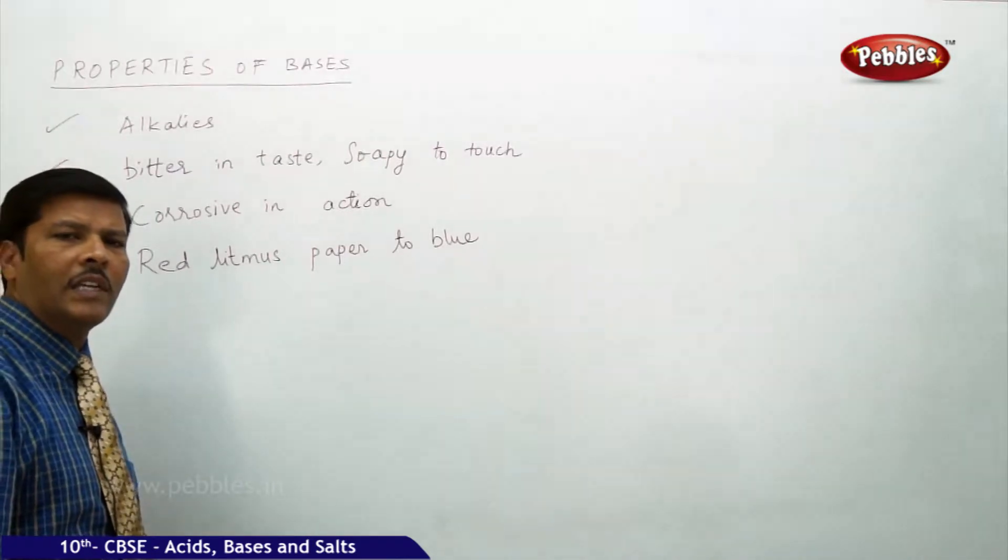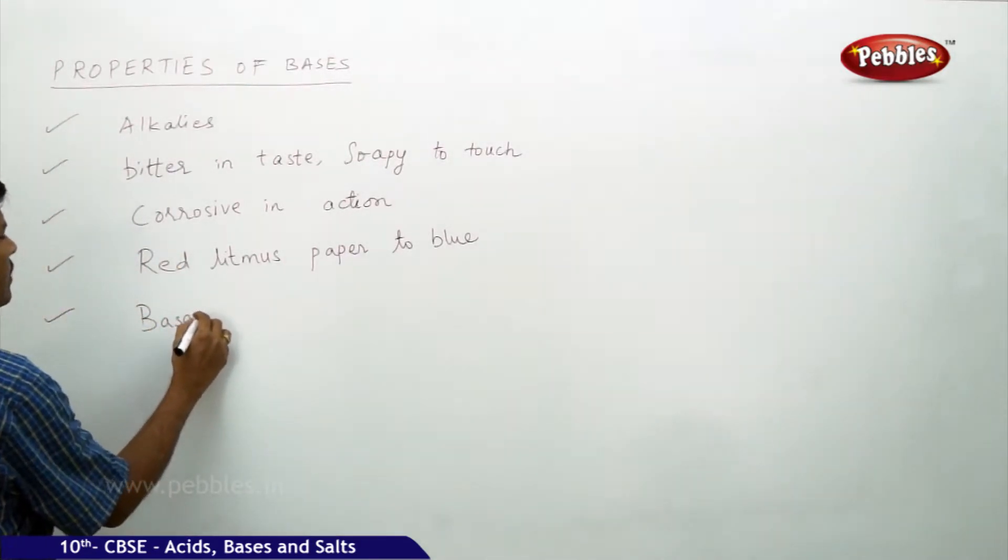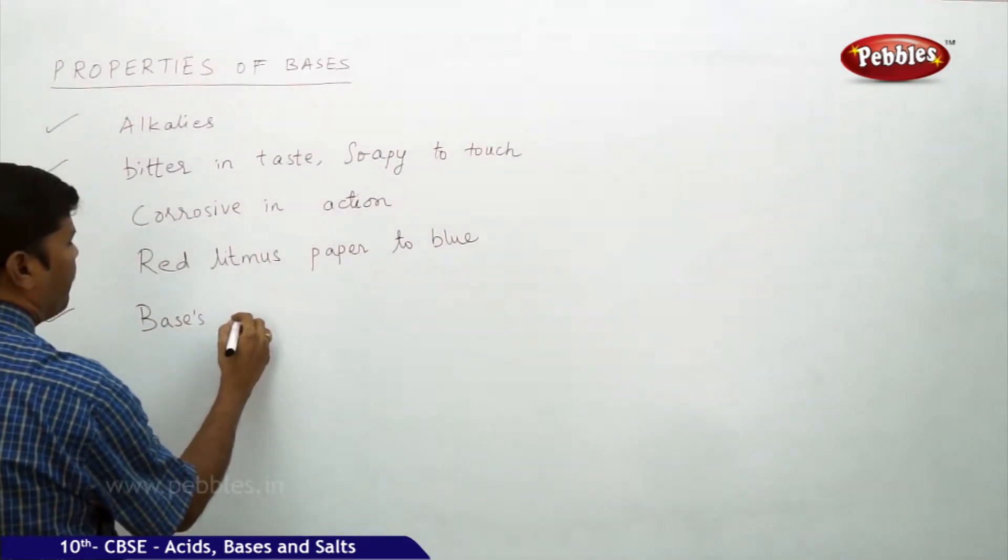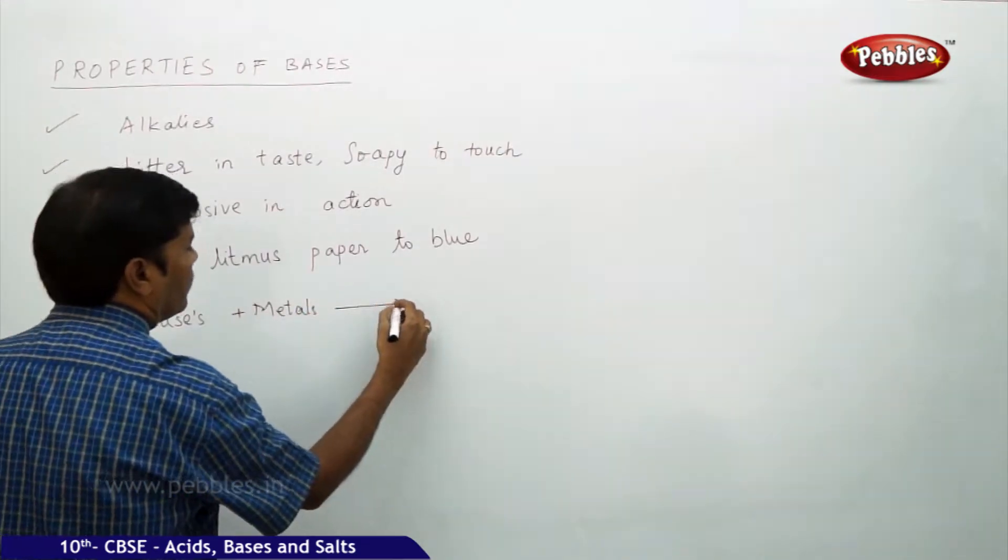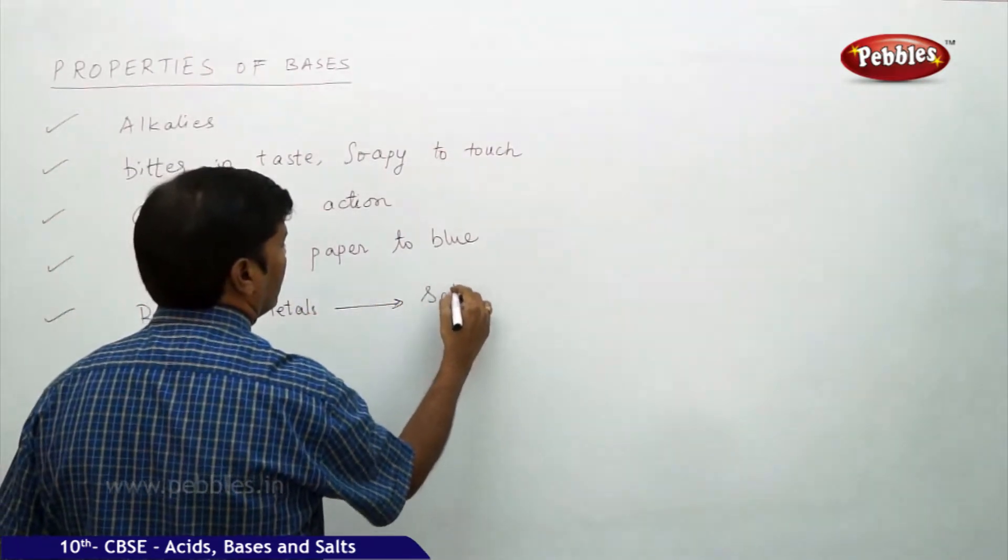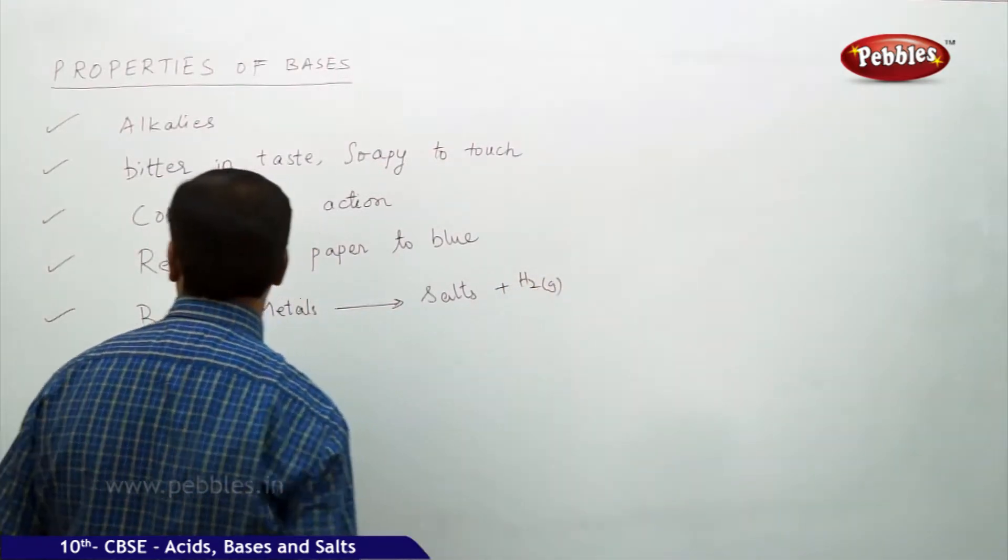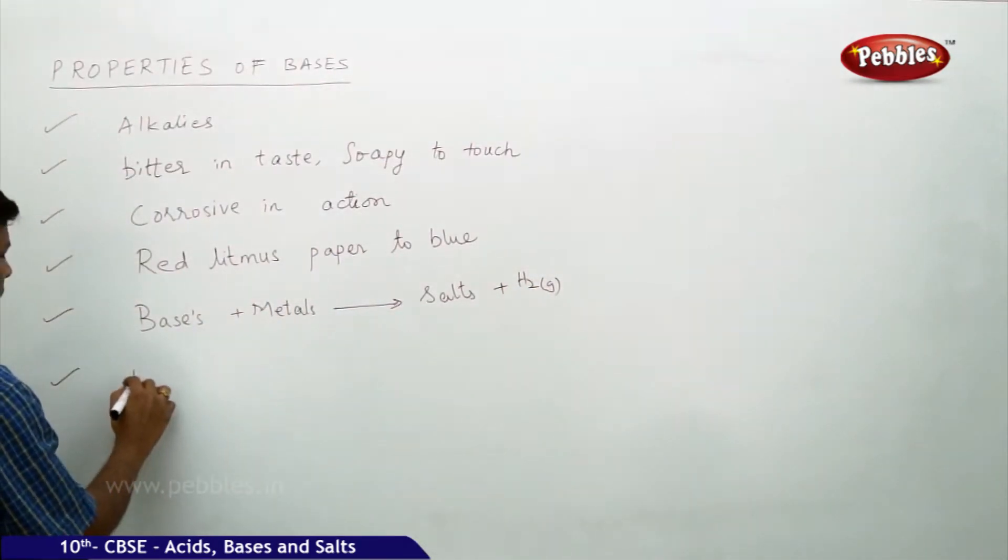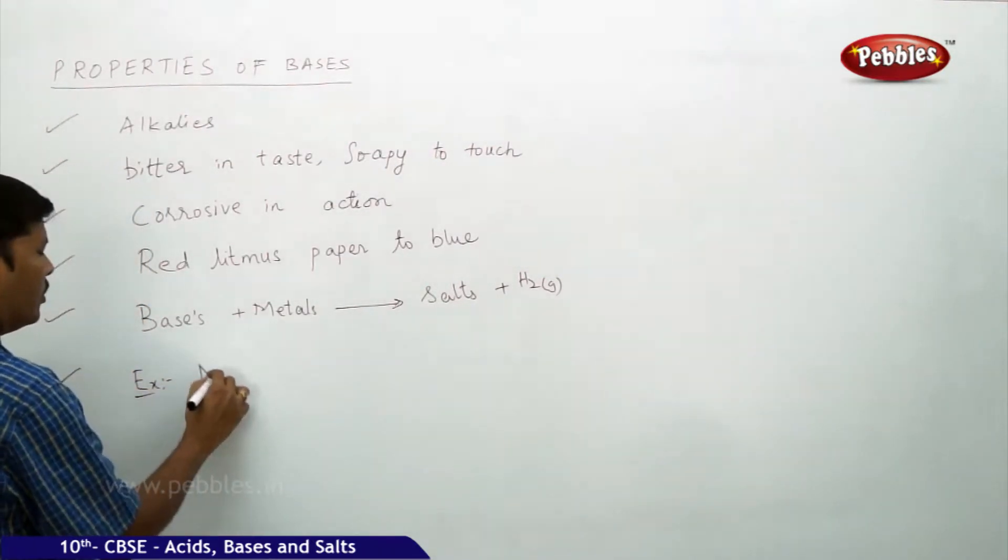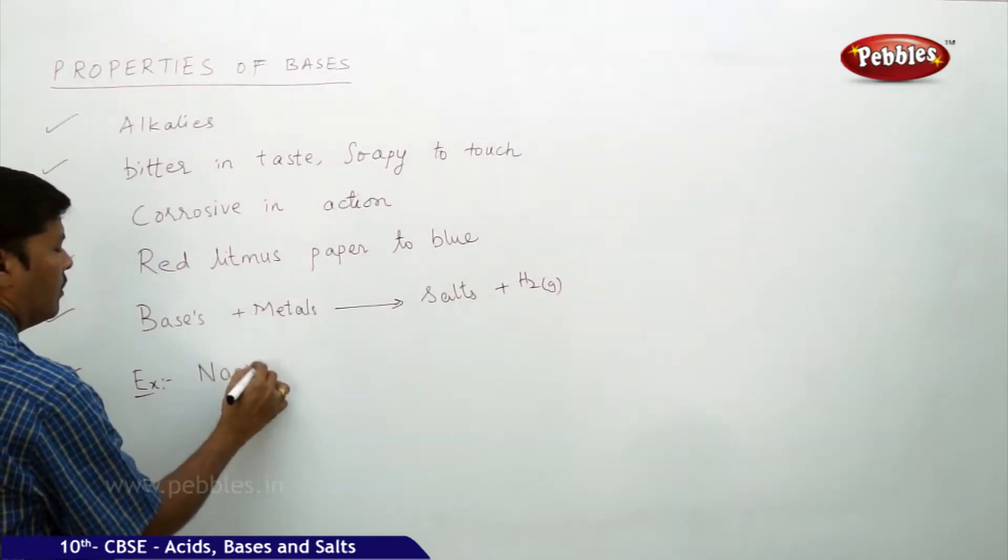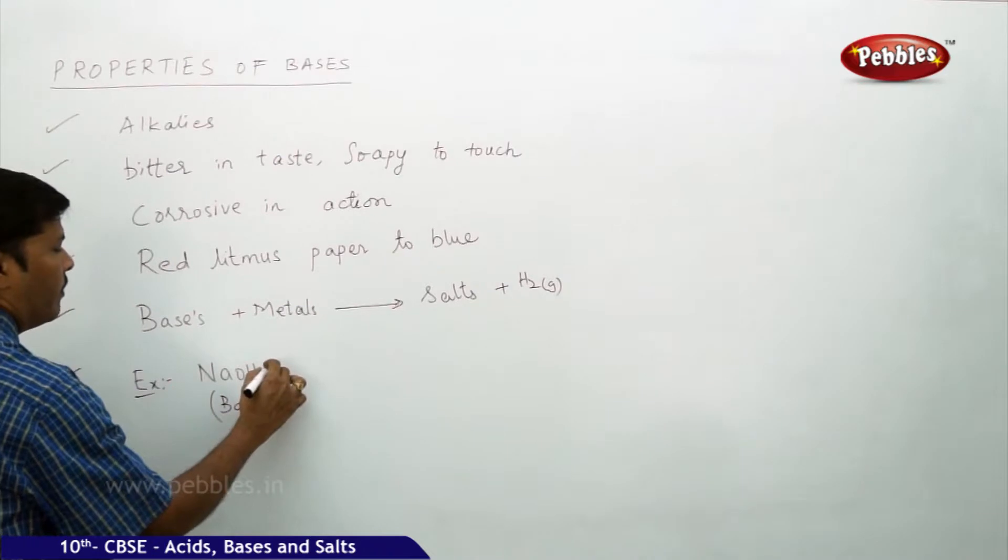If you take bases, just like acids, bases react with metals to give salts and they liberate hydrogen gas. For example, if you take NaOH, which is a base, plus a metal.